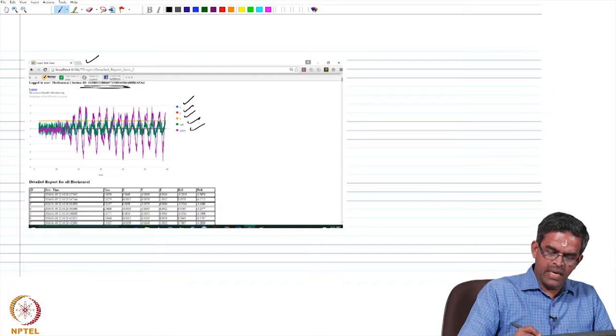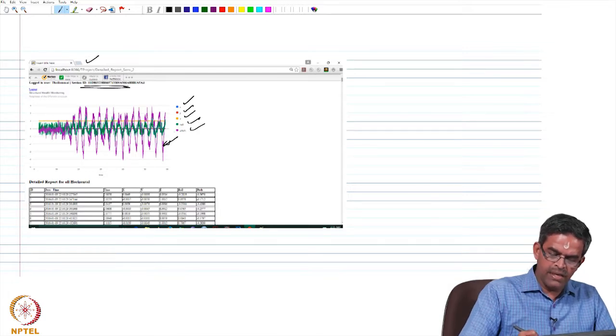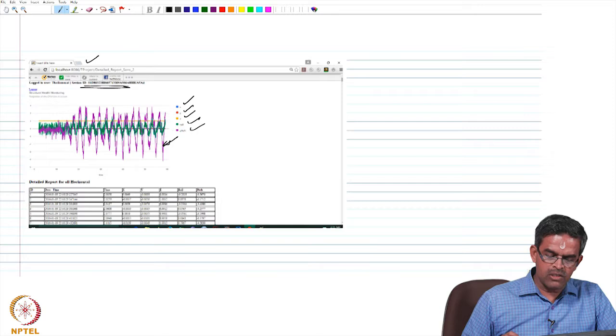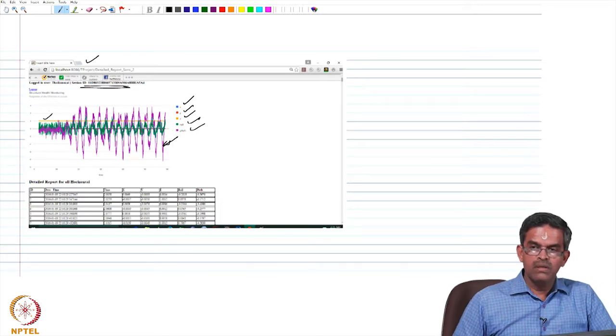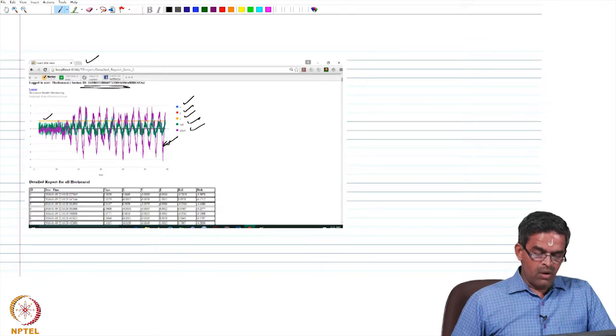For example, let us say the pitch value which is indicating in cyan color has exceeded the threshold value. The threshold value may be shown for example in the orange line.